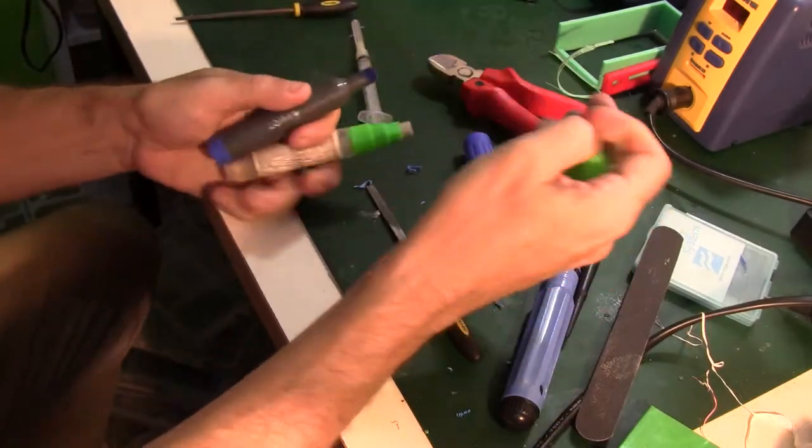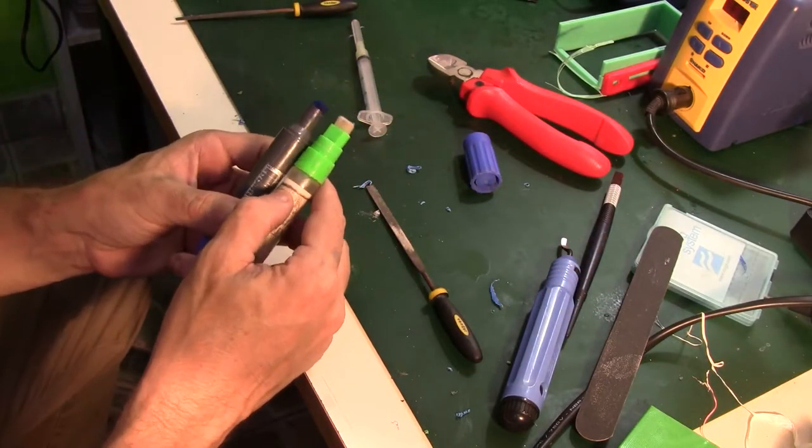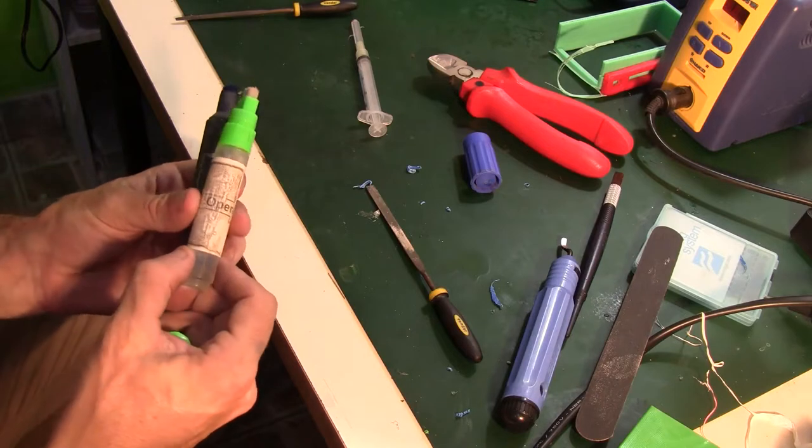You can see that the tips of the marker and the acetone pen are quite similar. But the marker tip has paint on it, which you'll correct in a minute.